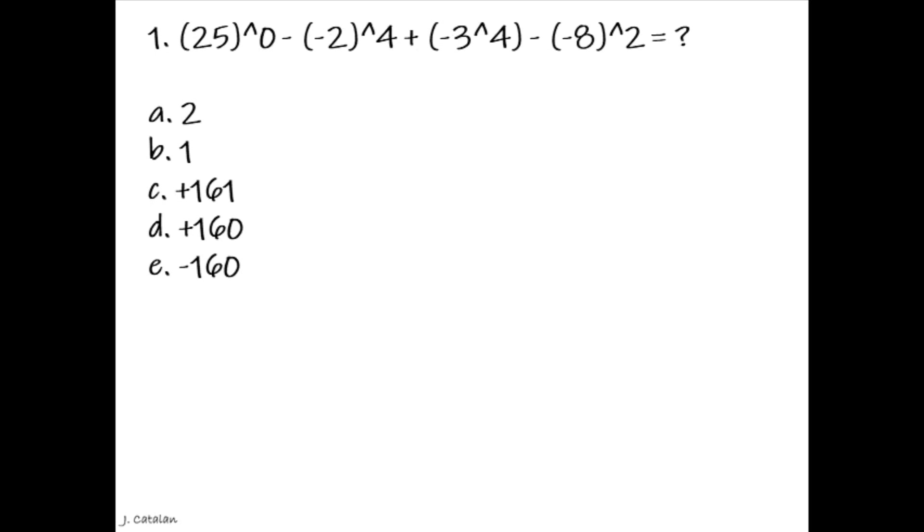Question: 25 carat 0, subtracted by the result of negative 2 carat 4, added by the result of negative 3 to the power of 4, subtracted by the result of negative 8 carat 2, is equals to. Answer: Negative 160.